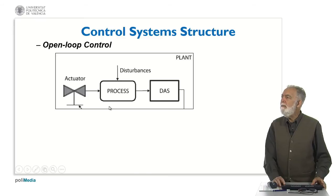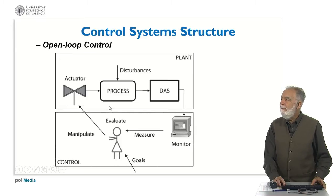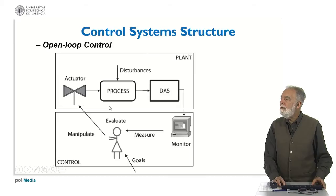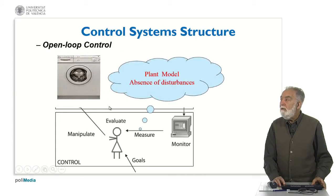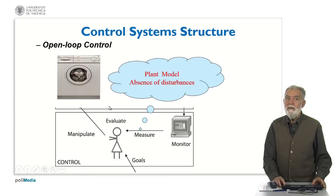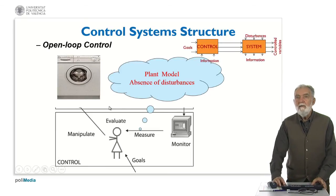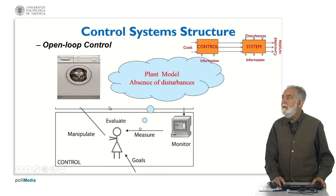Let's consider first the open loop control. We have the process, the data acquisition system, and the actuator. We can manipulate the actuator — in that case the control is the operator, the person dealing with the input to the process. We need to have a good model of the plant, and the controlled plant should have no disturbances. This is the case of the automatic washing machine, where we don't have continuous control of the operation. This corresponds to a scheme where the controller and the system are in series.